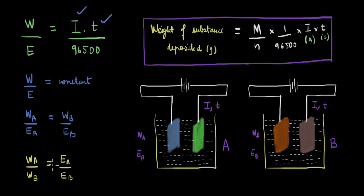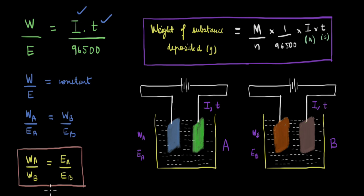In other words, the ratio of the weights deposited of metal A and metal B will be the same as the ratio of their equivalent weights — which is Faraday's second law. As you can see, this relationship can be derived by just rearranging these terms, so Faraday's second law actually just follows from Faraday's first law.